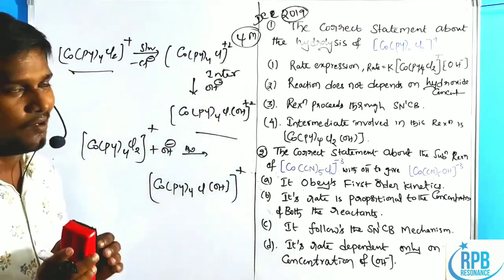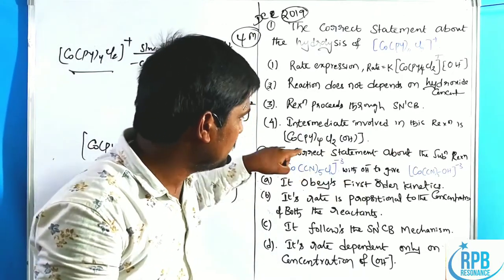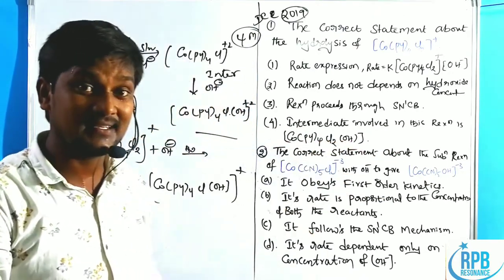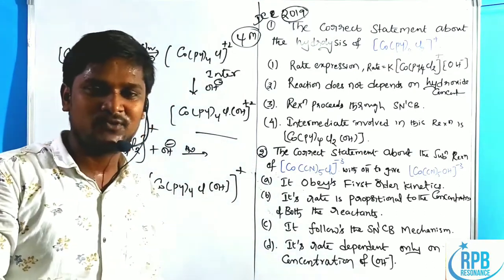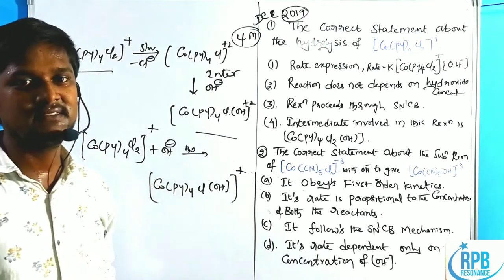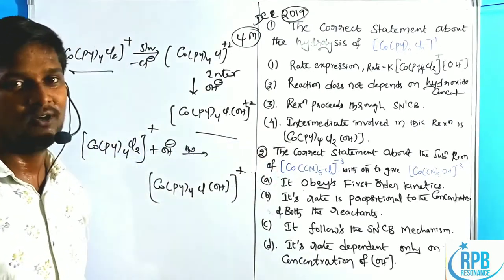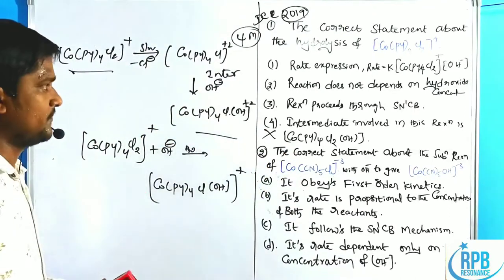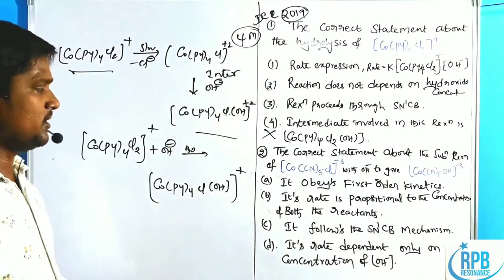Regarding the intermediate: the option states the intermediate involved in this reaction is hepta-coordinated — that would be [Co(py)4Cl2(OH)]. However, hydrolysis reactions proceed through the dissociative mechanism, and those are the evidences for it. The hepta-coordinated intermediate is incorrect; this is not the correct option.